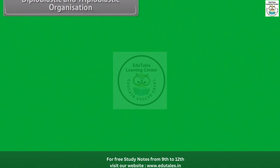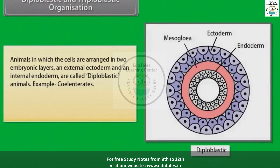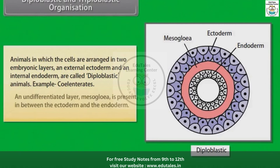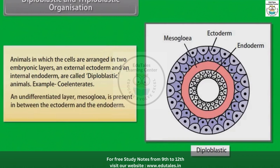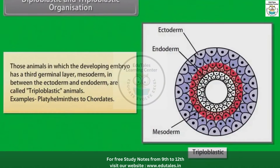Diploblastic and Triploblastic Organization: Animals in which cells are arranged in two embryonic layers — an external ectoderm and an internal endoderm — are called diploblastic. Example: coelenterates. An undifferentiated layer called mesoglea is present between the ectoderm and the endoderm. Those animals in which the developing embryo has a third germinal layer, mesoderm, in between the ectoderm and endoderm are called triploblastic animals. Example: Platyhelminthes to chordates.